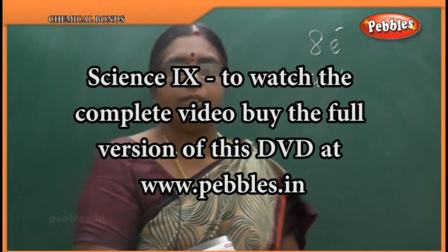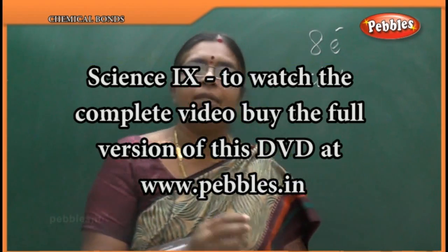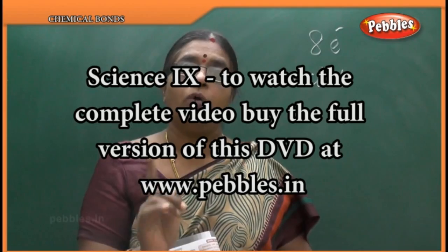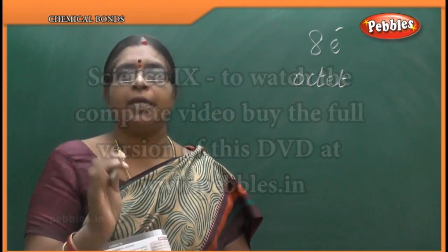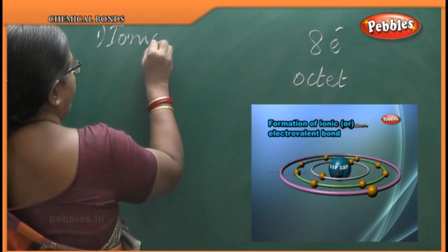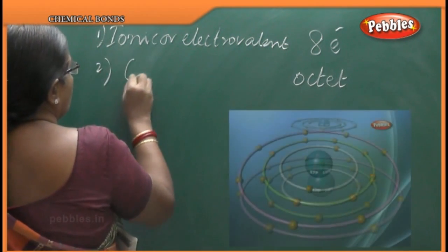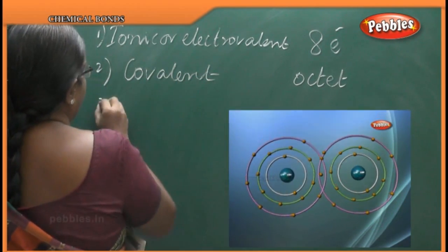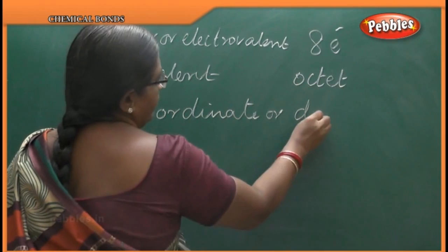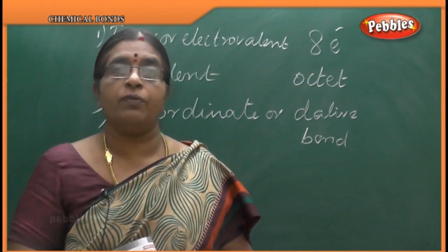Octet means 8 electrons in the outermost orbital — those are called valence electrons. The electrons present in the outermost orbital are called valence electrons. He concluded that all atoms either give, take, or share electrons to get that octet arrangement in the outermost orbital. Based on that, he came to the conclusion that there are 3 types of bonds: the first is ionic or electrovalent bond, the second is covalent bond, and the third is coordinate or dative bond. These 3 types of bonds are formed between atoms to form a molecule.